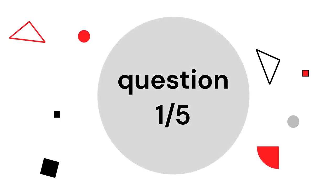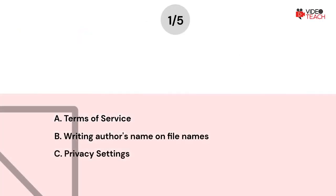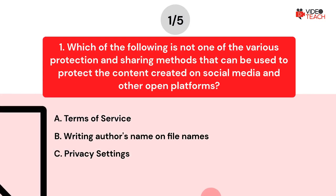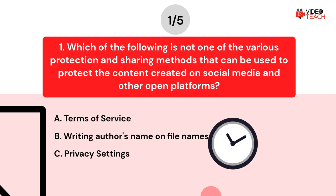Question number one. Which of the following is not one of the various protection and sharing methods that can be used to protect the content created on social media and other open platforms? Option A: Terms of service. Option B: Writing author's name on file names. Option C: Privacy settings. Now you have about 15 seconds to think about your answer.